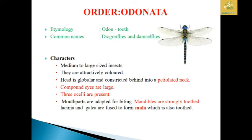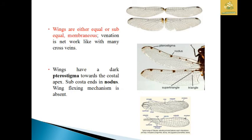The mandibles are strong and toothed; the lacinia and glossae are fused to form the mola, which is also toothed. Wings are either equal or subequal and membranous. Wing venation is a network with many cross veins. You can see the nodus, pterostigma, subtriangle, and triangle which form a perfect vein system for flight.